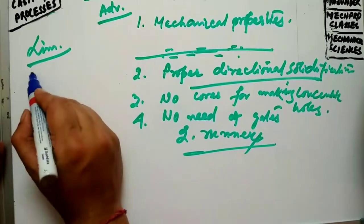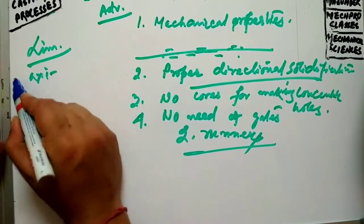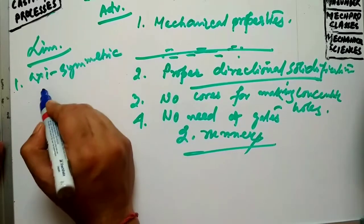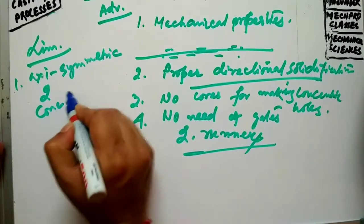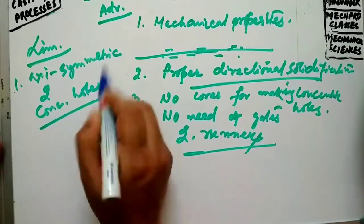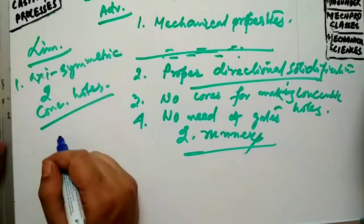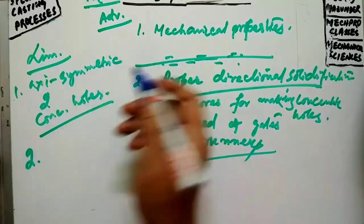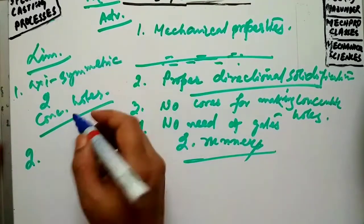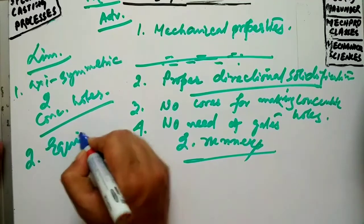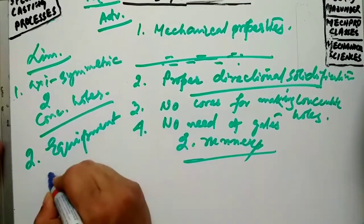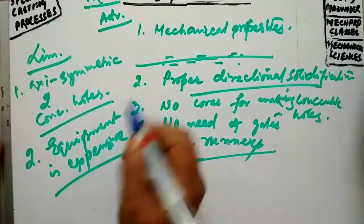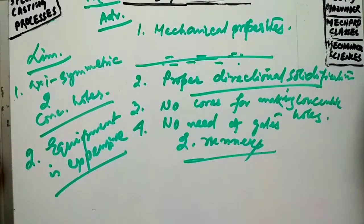Limitations of true centrifugal casting: only axisymmetric shapes with concentric holes are suitable for this process. Additionally, the equipment is expensive and thus it is suitable only for large quantity production.